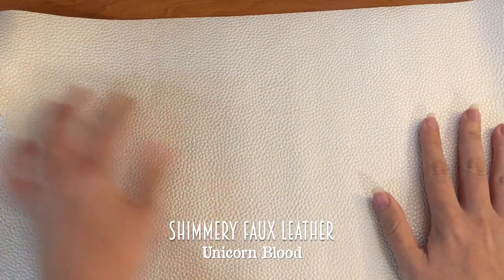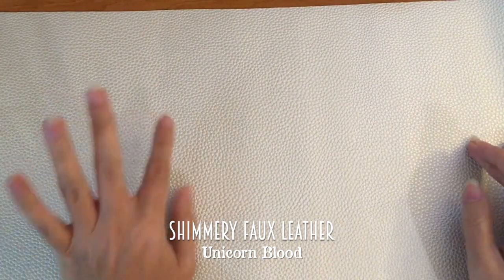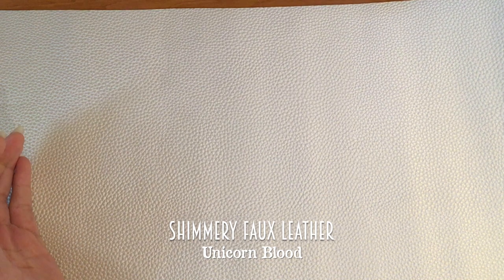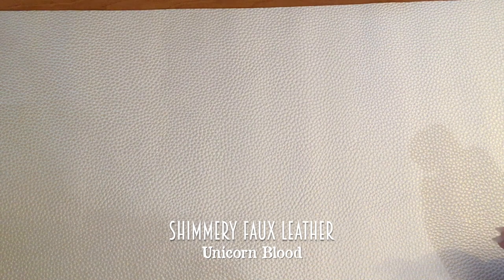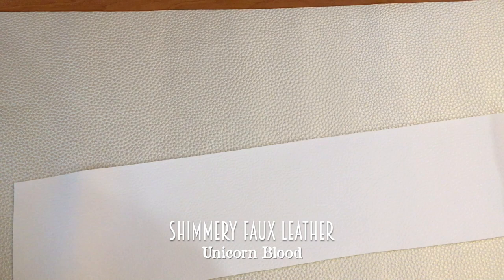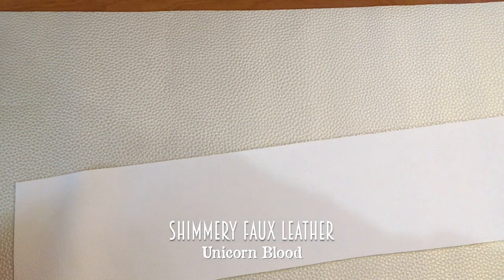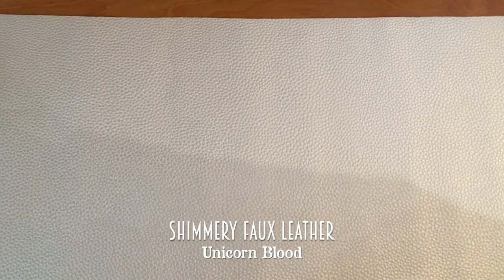And last for the shimmery leather is unicorn blood. And this color I mean to me it looks silver. I guess for some people it could look white. But it's a really nice in between. Maybe a pearl I would say. But as you can see this is white next to it. It's obviously darker. A little bit warmer I would say. But yeah to me it looks silver. So unicorn blood is quite a good name I believe.